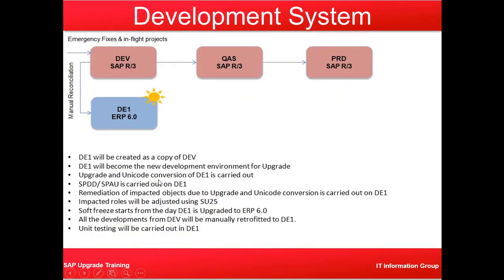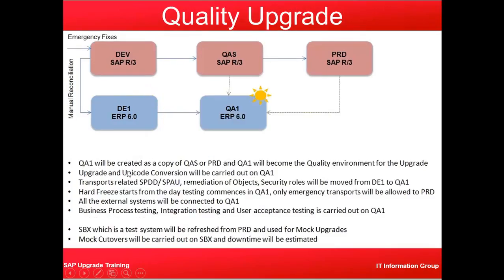The upgrade and unicode conversion will be carried out in the QA1 system. Transports related to SPDD and SPAU remediation of objects, and security roles adjusted using SU25 that were done in DE1, will be moved from DE1 to QA1. So the transports created during SPDD and SPAU are transported into QA1, and the security roles modified using SU25 are also transported to QA1.